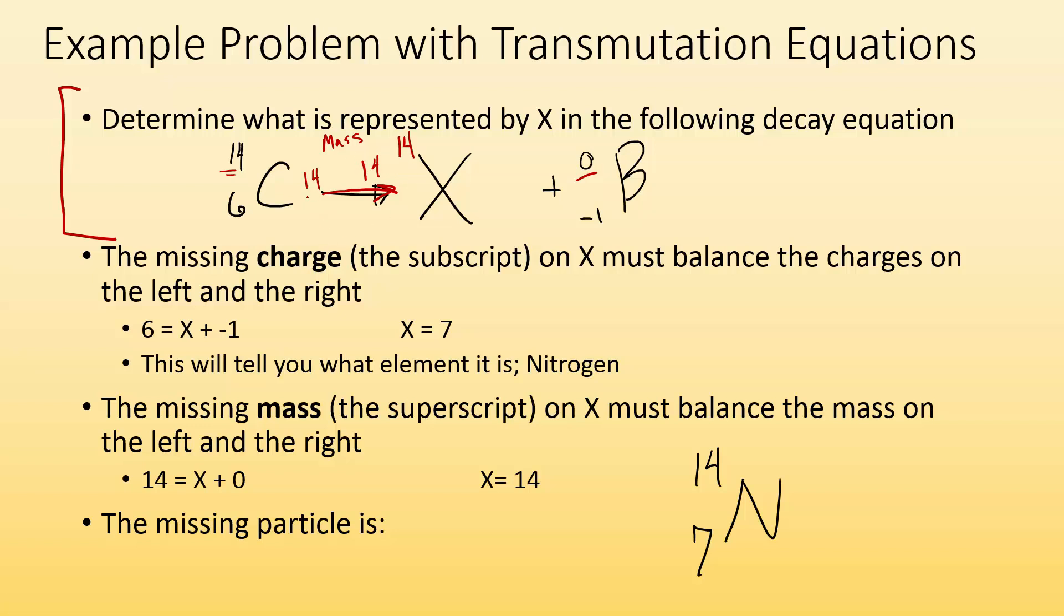Now I've got to do the same thing for the charge. The charge on the left side is plus 6 from the 6 protons in that carbon. On the right side, I have a minus 1 charge from the beta particle, so it's got to be minus 1 and some number. And negative 1 gives me 6, 7. So that right here has got to be 7. So I'm getting 14 for the mass equals 14 and 0. And then for the charges, I get 6 equals 7 and a negative 1. So what element is that? That's going to be nitrogen. So I know X is nitrogen with a mass of 14.